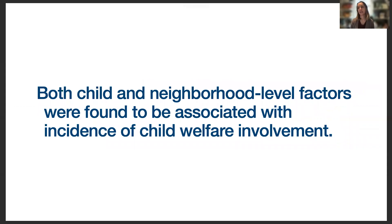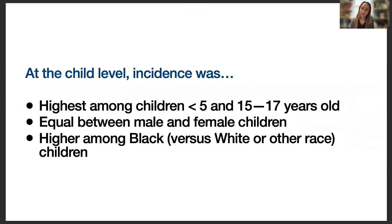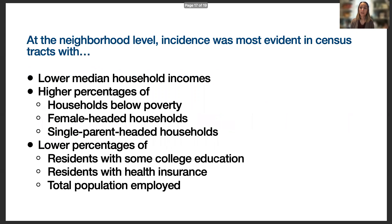We found that both child and neighborhood level factors were associated with incidence of child welfare involvement. At the child level, incidence was highest among the youngest and oldest children — under five or 15 to 17 — equal between male and female children, and higher among Black children versus White or other race. At the neighborhood level, incidence was highest in census tracts with lower median household incomes, higher percentages of households below poverty, higher percentages of female-headed or single-parent households, lower percentages of residents with at least some college education, lower rates of health insurance coverage, and lower percentages of the population employed.